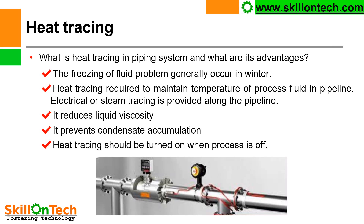Heat tracing. You can see a picture of a pipeline where heat tracing is provided. What is heat tracing in a piping system and what are its advantages? In industries where atmospheric temperature is very low, freezing of fluid in the system is a very common problem. To avoid this freezing problem, which occurs generally in winter, heat tracing is provided. Heat tracing is required to maintain the temperature of process fluid in the pipeline. There are two types: electrical or steam tracing. It reduces liquid viscosity, prevents condensate accumulation. Heat tracing should be turned on when the process is off.